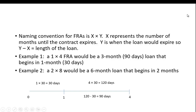The naming convention for FRAs is X by Y, where X represents the number of months until the contract expires and Y is when the loan would expire. So Y minus X is the length of the loan. For a 1 by 4 FRA, that would be a three-month, or 90-day, loan that begins one month in the future. For a 2 by 8 FRA, that would be a six-month loan that begins in two months.